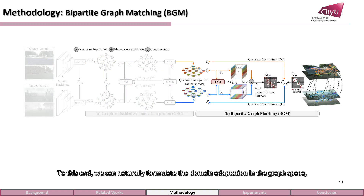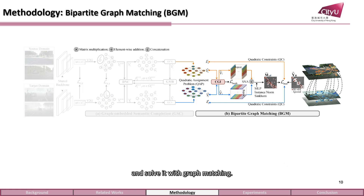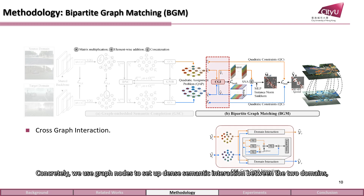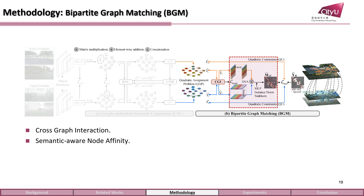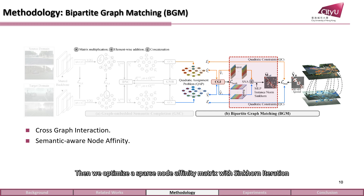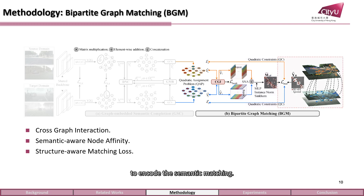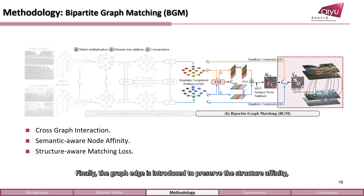To this end, we can naturally formulate domain adaptation in the graph space and solve it with graph matching. Concretely, we use graph nodes to set up dense element interaction between the two domains using an attachment mechanism. Then we optimize a sparse node affinity matrix with Sinkhorn iteration to encode the semantic matching. Finally, the graph edge is introduced to preserve the structure affinity and achieve a node-to-node alignment in a matching loss.